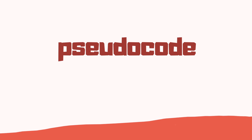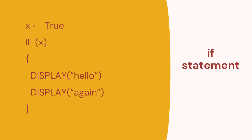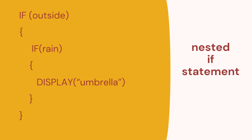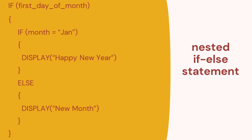Finally, let's look at the pseudocode for nested if statements. Here we have a simple if statement in Python with two print statements, and we can write that in pseudocode as before. For our nested if statement — if rain nested inside an if outside — here is the nested if statement in pseudocode. And for an if-else statement nested in an if statement, we use the display keyword. Those are the pseudocode versions of the code we've seen during this video.